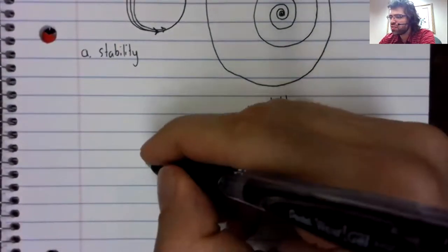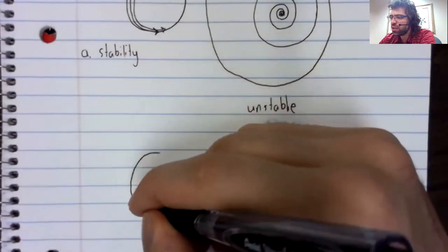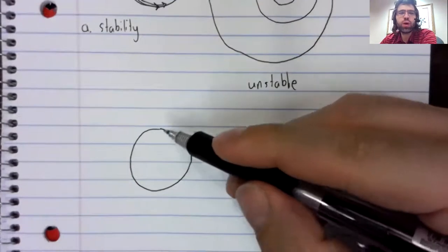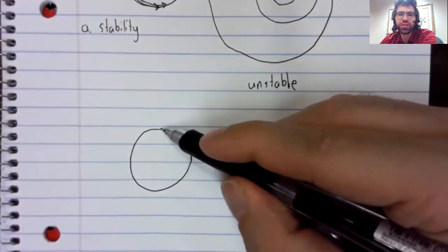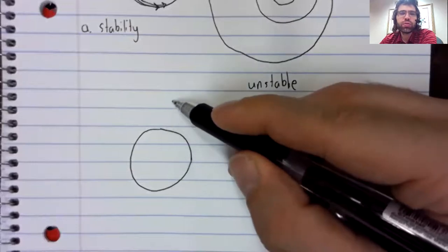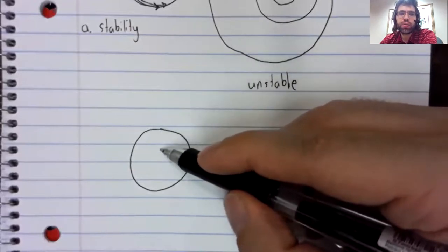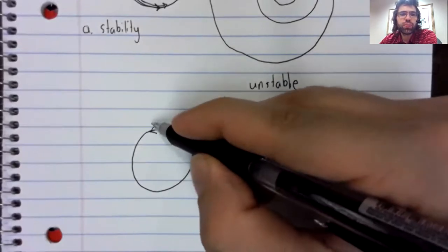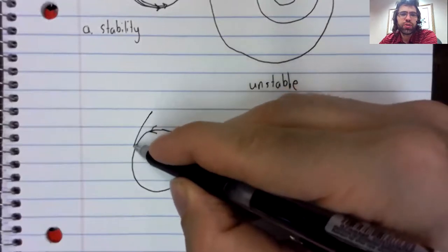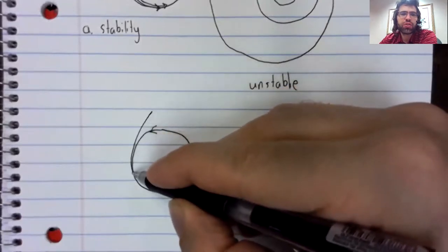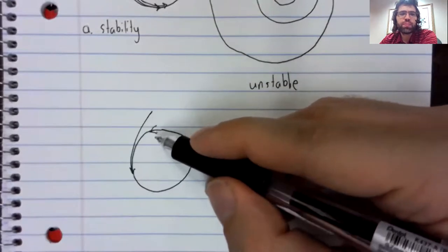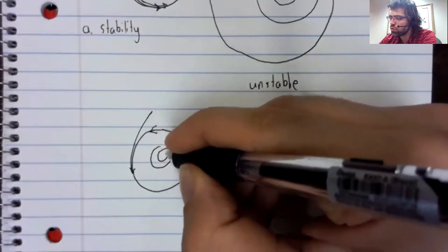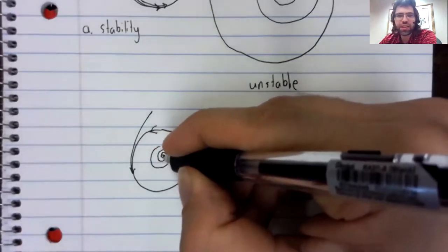And as far as semi-stability, you could be pushed off an orbit in one of two directions, sort of outwards or inwards. And maybe if you are pushed outwards, you converge back towards the orbit. But if you are pushed inwards, you don't. You do something like this.